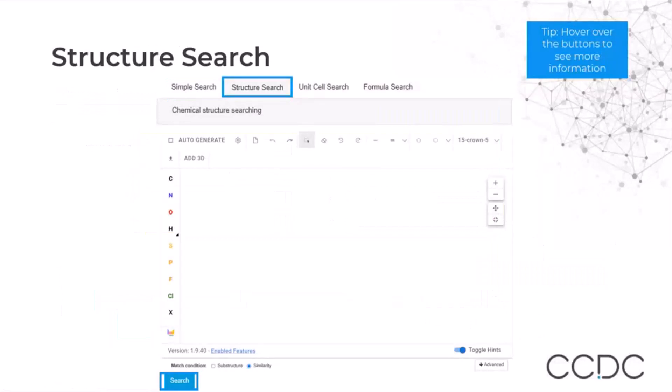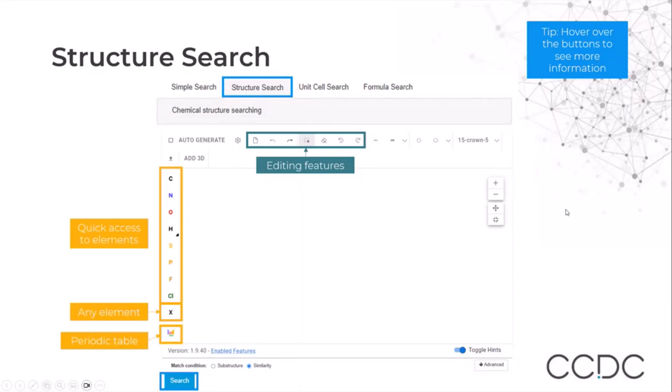Moving to the structure search, this is where we can draw the substructure that we are interested in. We have the sketcher and we will see some of the options. We start from some editing features, including clearing the canvas and undoing or redoing. On the left-hand side, we have quick access to the elements, including any element and access to the periodic table for more elements.